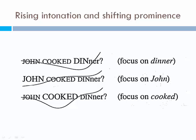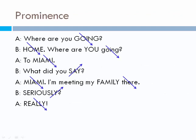Let's take a look at a dialogue emphasizing prominence. 'Where are you going?' 'Home.' 'Where are you going?' 'To Miami.' 'What did you say?' 'Miami. I'm meeting my family there.' 'Seriously? Really?' Here we have prominence and intonation patterns — the voice goes down on WH questions and statements, and the voice goes up on questions asking to repeat and on surprise. It's very important to pay attention to prominence and which intonation pattern to use.